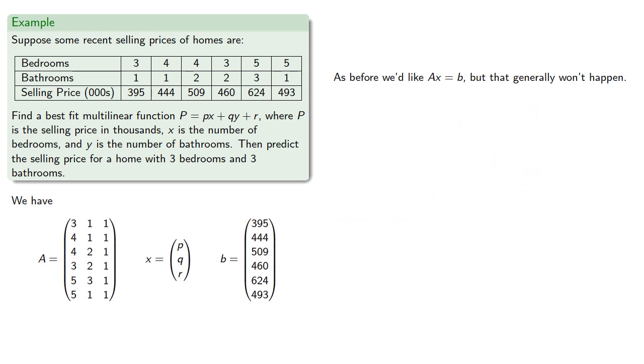As before, we'd like A applied to x to give us that column of constants. But that generally won't happen. And so again, we'll minimize the norm of Ax minus b, which we can do by solving A transpose A x equals A transpose b.